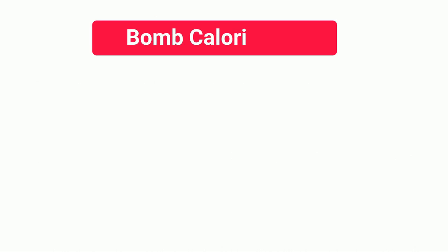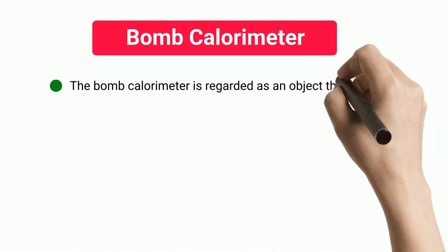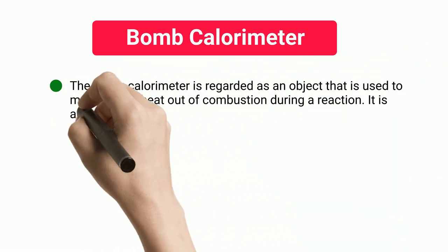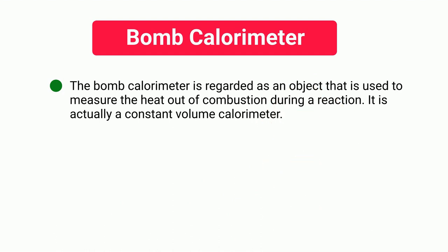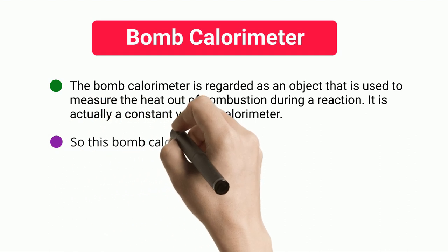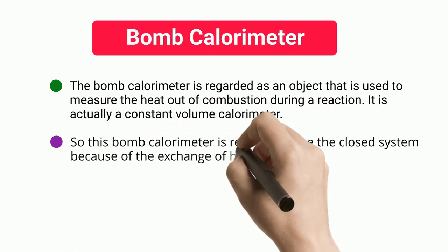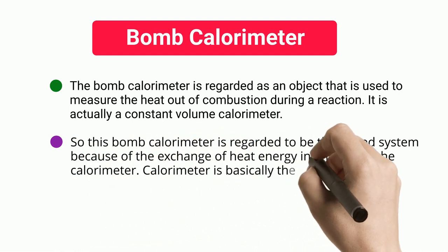The bomb calorimeter is an object used to measure the heat output of combustion during a reaction. It is actually a constant volume calorimeter. The bomb calorimeter is regarded as a closed system because of the exchange of heat energy in and out of the calorimeter.